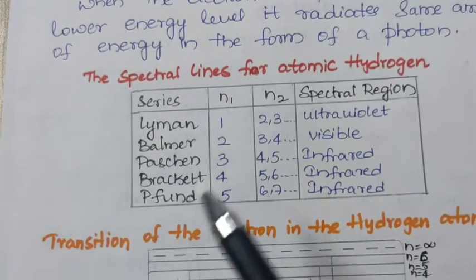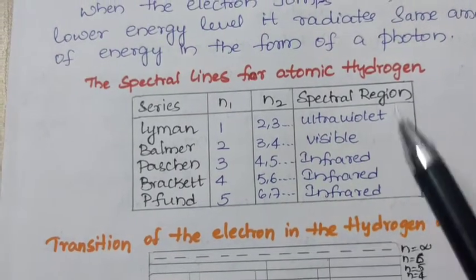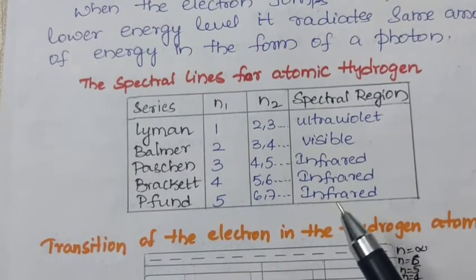And last one is Pfund series, N1 is equal to 5 and N2 value is 6, 7 and so on in the spectral region, infrared region.